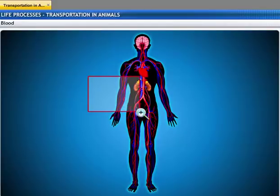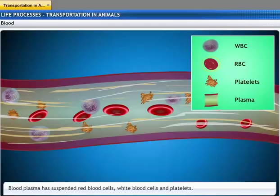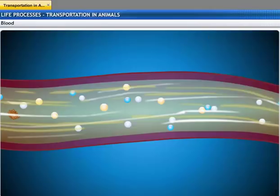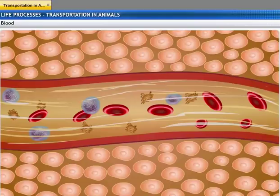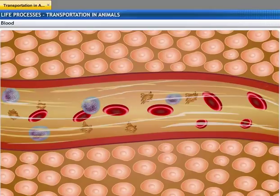Blood is a fluid connective tissue that consists of a fluid medium called plasma, in which red blood cells, white blood cells and platelets are suspended. Plasma transports food, carbon dioxide and nitrogenous wastes in dissolved form throughout the body. Oxygen is delivered to the tissues by a pigment called hemoglobin that is present in red blood cells.